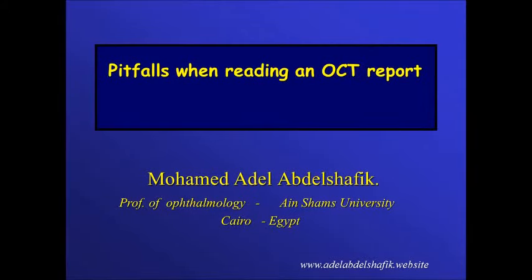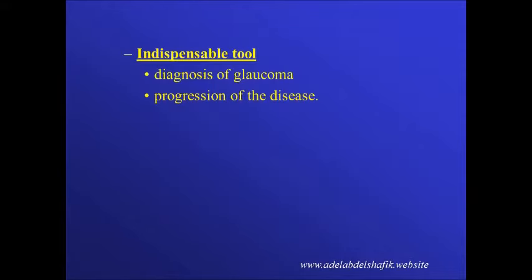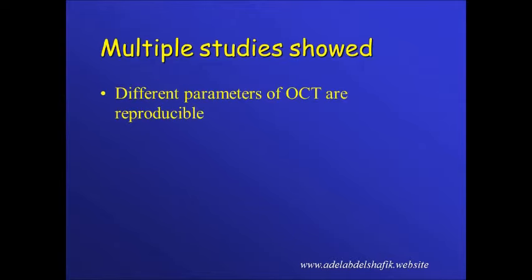OCT can measure structural changes in the disc and the retinal fiber layer around it, and also can measure changes of the ganglion cells within the macula. It is an indispensable tool for both diagnosis of glaucoma and showing its progression. Multiple studies have shown that the different parameters of OCT are reproducible.